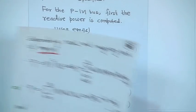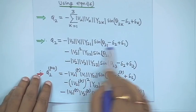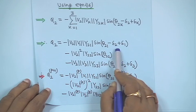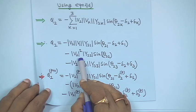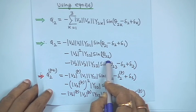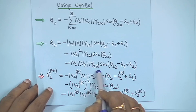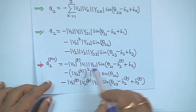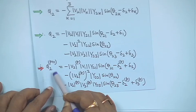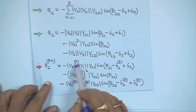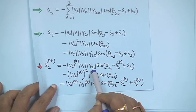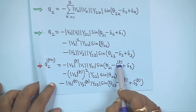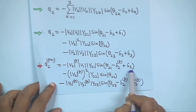Expanding this equation gives: Q₂ = −|V₂||V₁||Y₂₁|sin(θ₂₁ − δ₂ + δ₁) − |V₂|²|Y₂₂|sin(θ₂₂) − |V₂||V₃||Y₂₃|sin(θ₂₃ − δ₂ + δ₃). For the iterative procedure, Q₂^(p+1) is computed using voltages at iteration p, with V₂ magnitude constant (no p superscript needed on |V₂|) and δ₂^p varying.